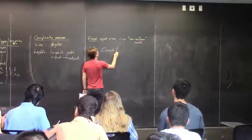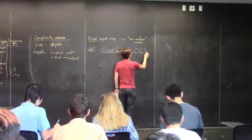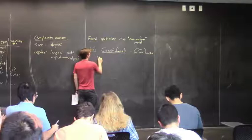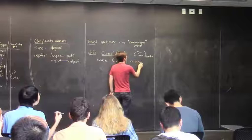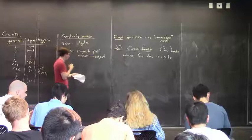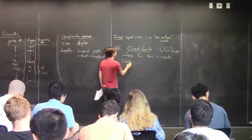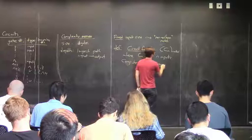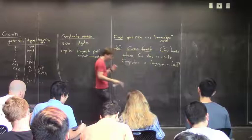A circuit family is just a collection of circuits C_n — one for each potential input length — where C_n has n inputs. So it's a circuit for length 0, a circuit for length 1, a circuit for length 2, and so forth. It's an infinite object, but now at least it can compute a language. Such a circuit family can compute or decide a language over the alphabet {0,1}. Now it's the kind of thing we can compare to Turing machines.